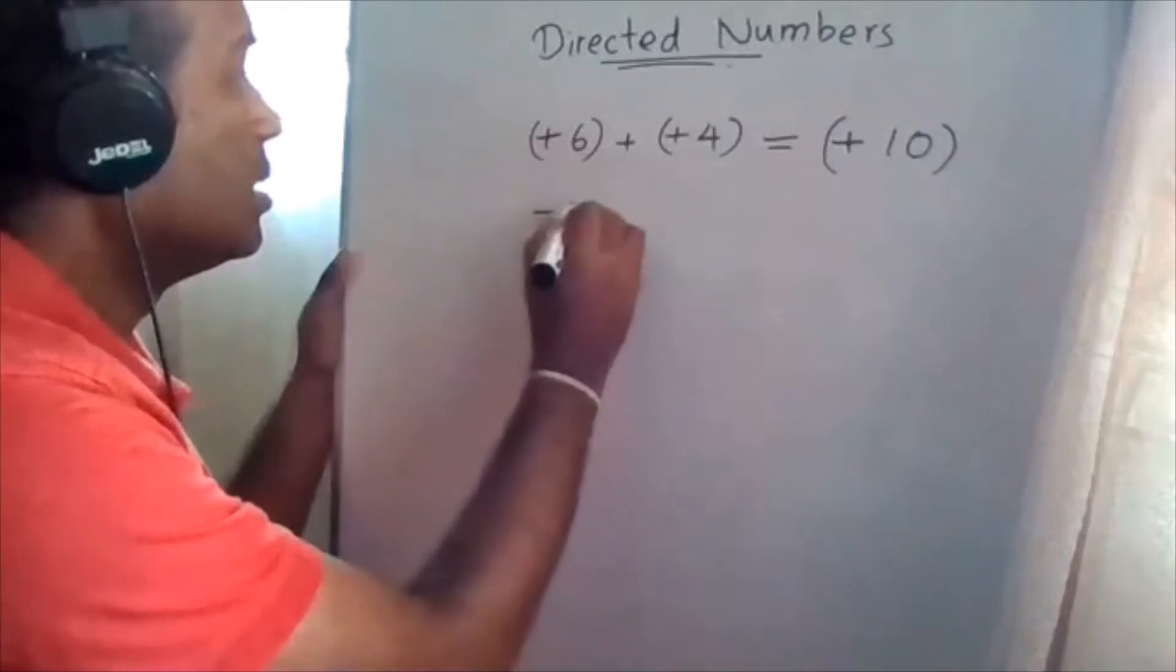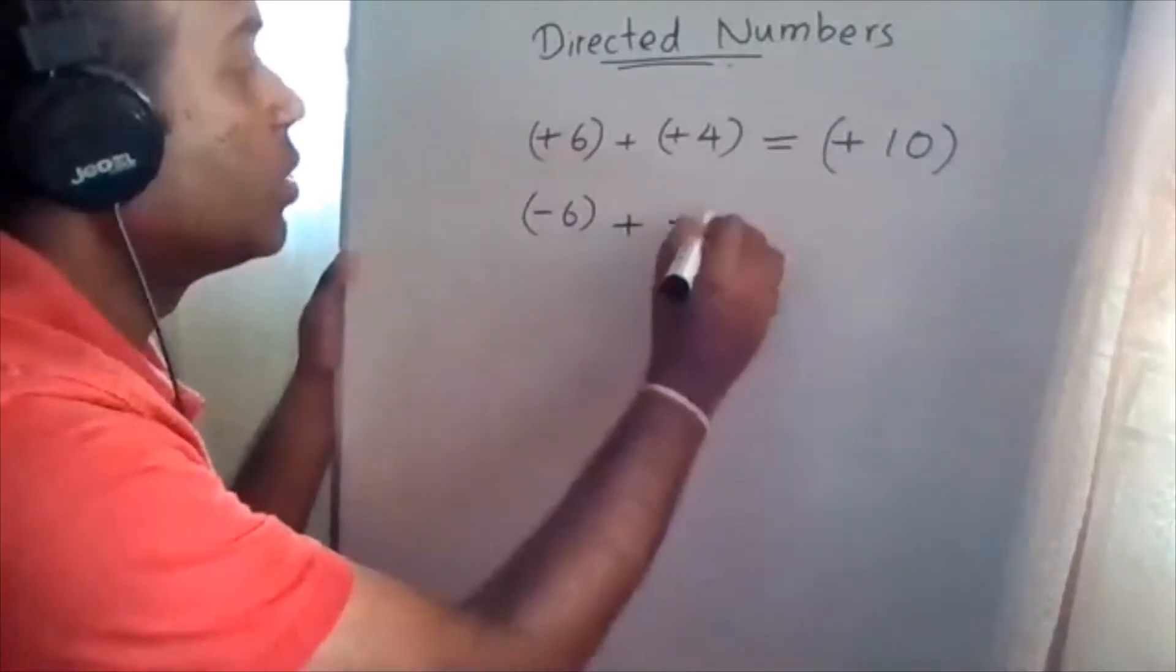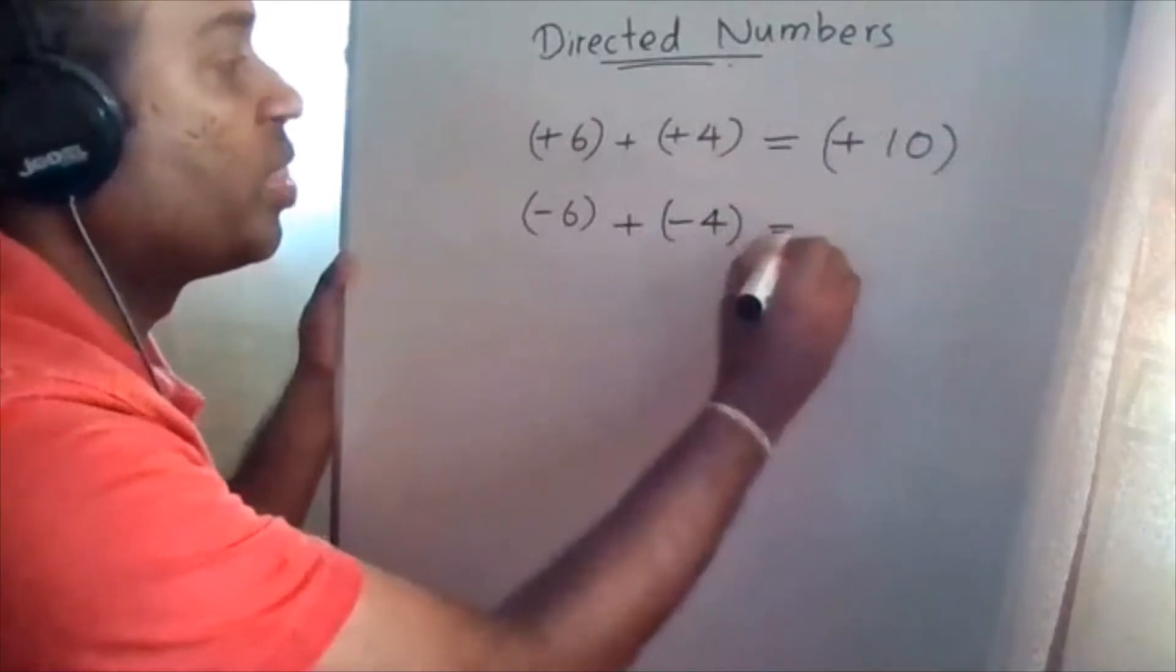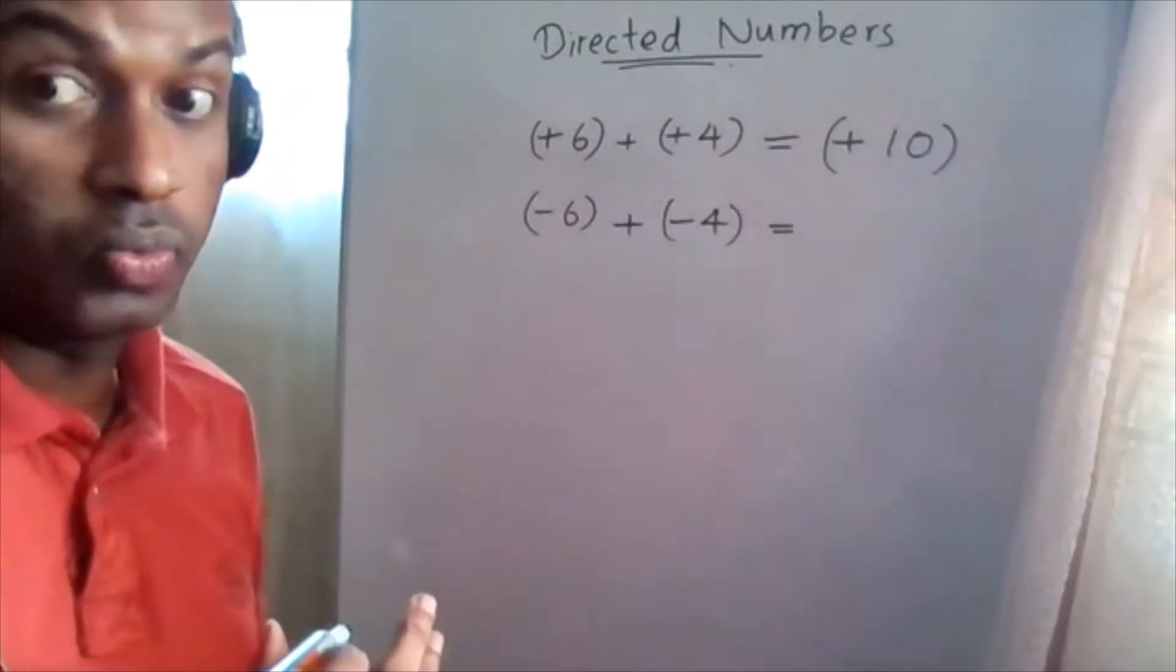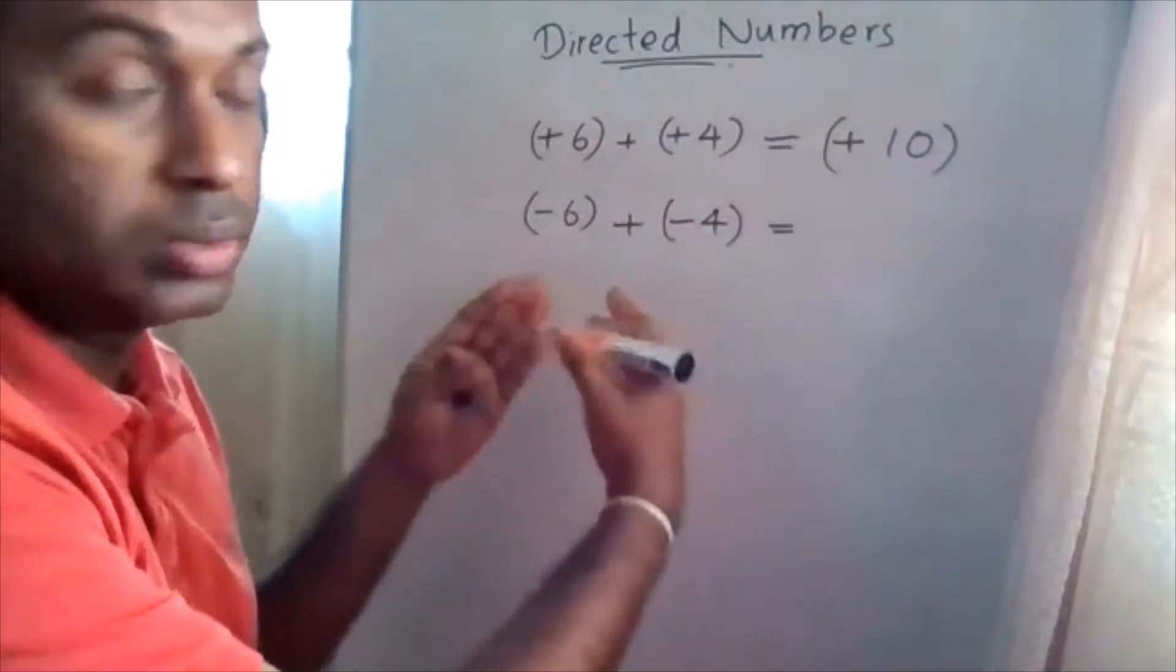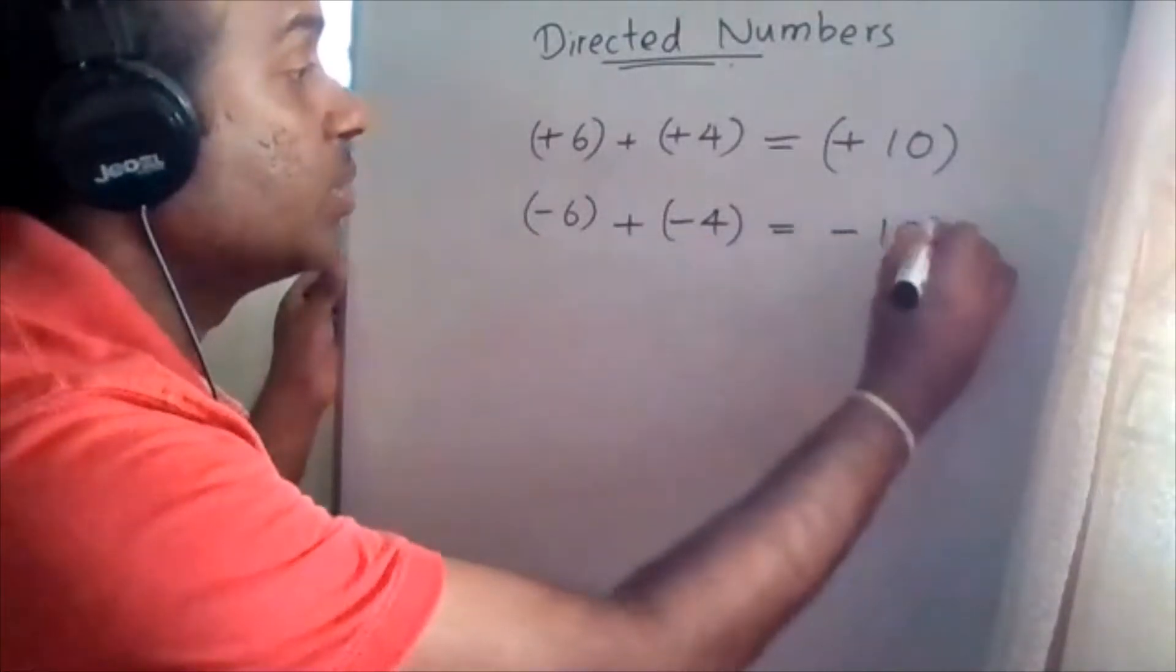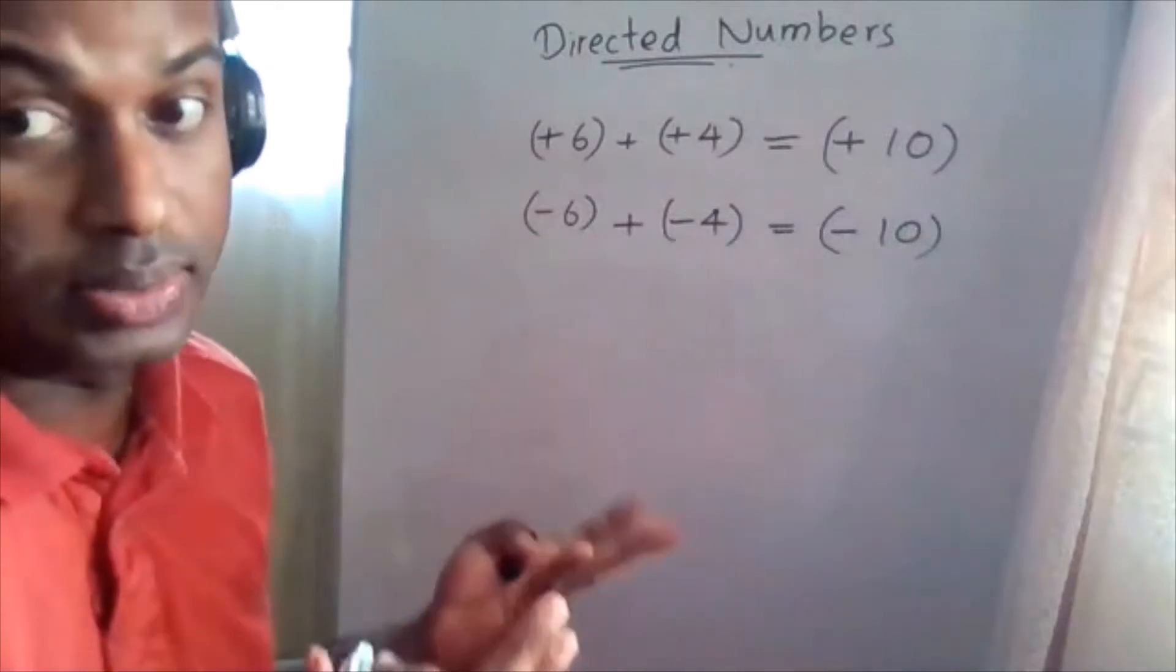Suppose this is negative 6 addition negative 4. Both are in same signs, negative 6 addition negative 4. Both are same negative. Therefore add in negatives together, negative 10.